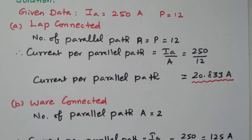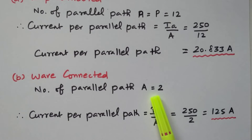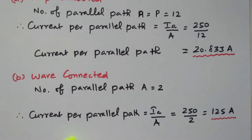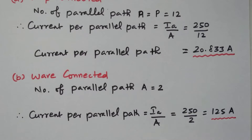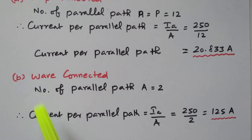If it is wave connected, the number of parallel paths is always 2, irrespective of the number of poles. So the current per parallel path equals Ia divided by A, which is 250 divided by 2, equal to 125 amperes. In wave connected, the current per path is 125 amperes, which is more than the lap connected. Wave connection is used for high current rating machines, while lap connection is used for high voltage rating machines.